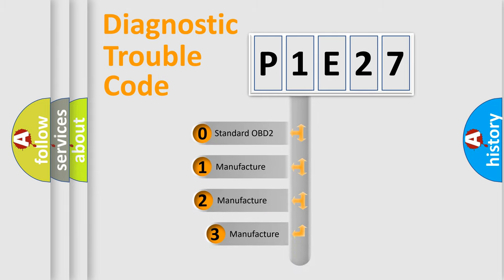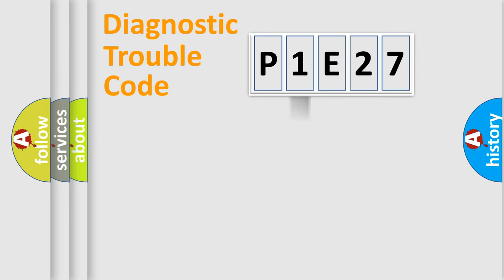If the second character is expressed as zero, it is a standardized error. In the case of numbers 1, 2, 3, it is a manufacturer-specific error.